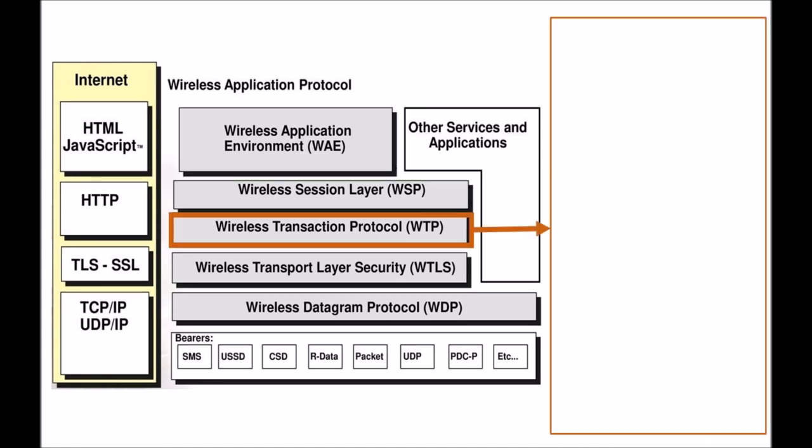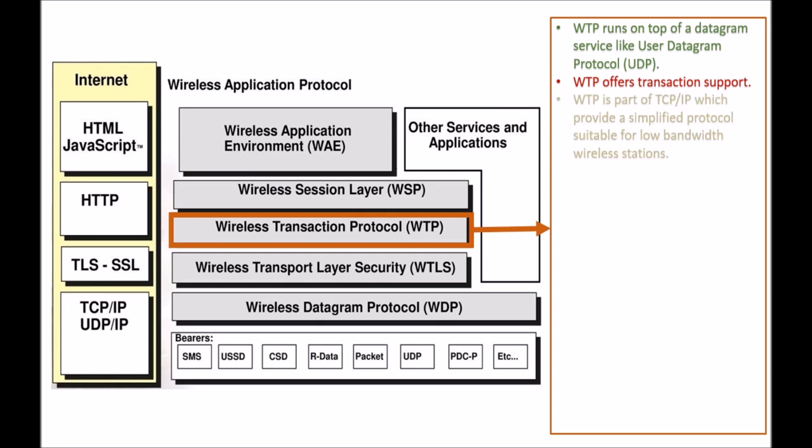Next we are having WTP, which is Wireless Transaction Protocol. WTP runs on top of datagram services like UDP, which is User Datagram Protocol. WTP offers transaction support, which is why the name given is Wireless Transaction Protocol. WTP is part of the TCP/IP suite and provides a simplified protocol suitable for low bandwidth wireless stations.